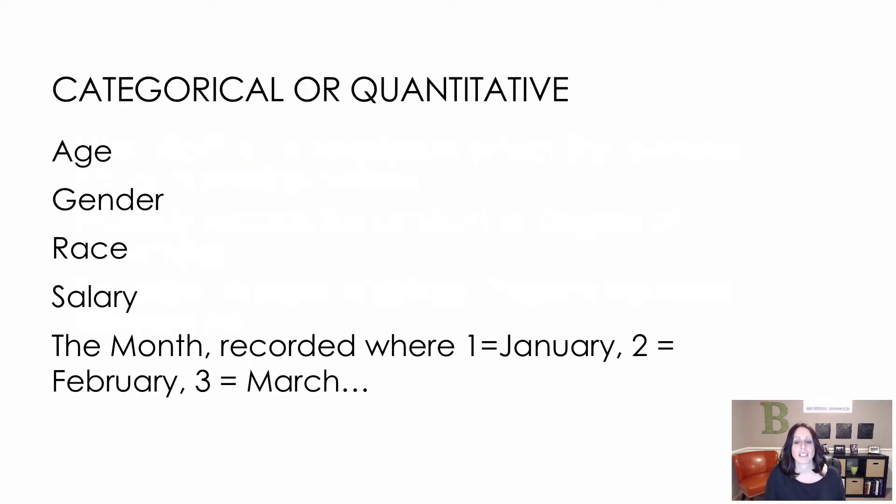So let's look at this list of values. Which one would be considered categorical and which ones would be considered quantitative? Looking at our first one, we're looking at age. Age is obviously a number, and assuming that we're just going to be finding the average age, we're going to call this quantitative.